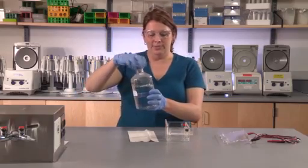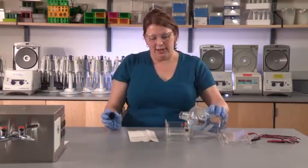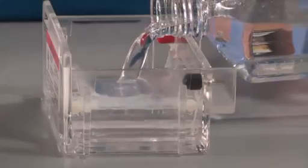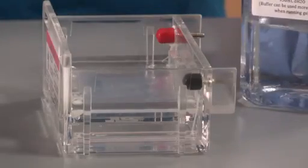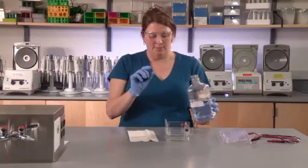Take the gel running buffer and fill the electrophoresis tank, being certain that you cover the top of the gel and have the wells submerged. A good height is at least three to five millimeters above the gel bed.